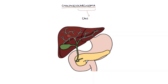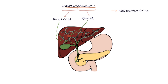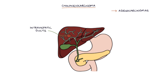Cholangiocarcinoma is a type of cancer that originates in the bile ducts. The majority are adenocarcinomas. It may affect the bile ducts inside the liver — the intrahepatic ducts — or the bile ducts outside the liver — the extrahepatic ducts.